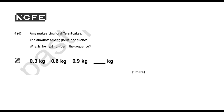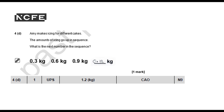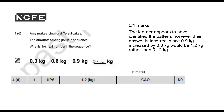Question 4D: Amy makes icing for different cakes. The amount of icing goes up in sequence. What is the next number in the sequence? The learner receives zero marks. They do appear to have identified the pattern; however, their answer is incorrect. Since 0.9 kilograms increased by 0.3 kilograms would be 1.2 kilograms rather than 0.12 kilograms, and the mark scheme specifically states CAO — correct answer only — the answer cannot be accepted.